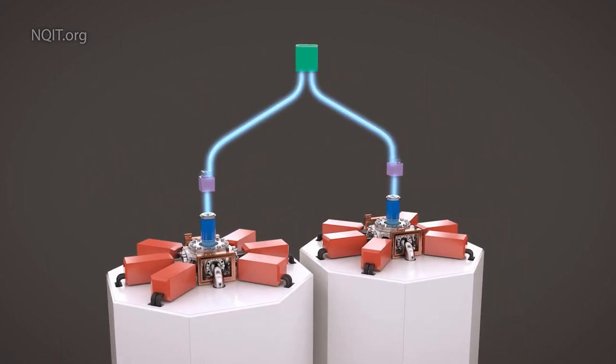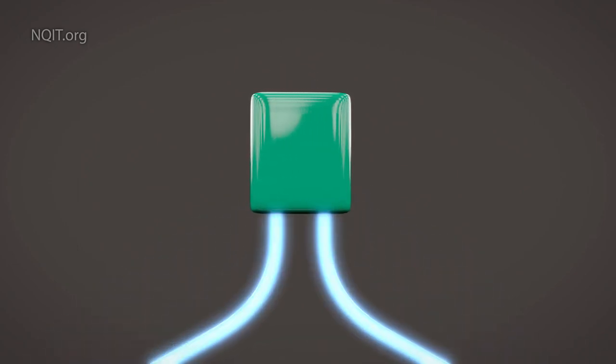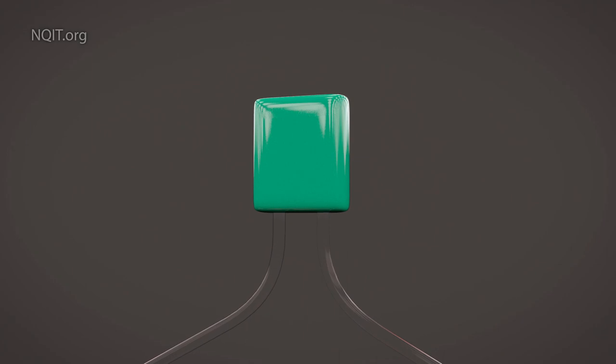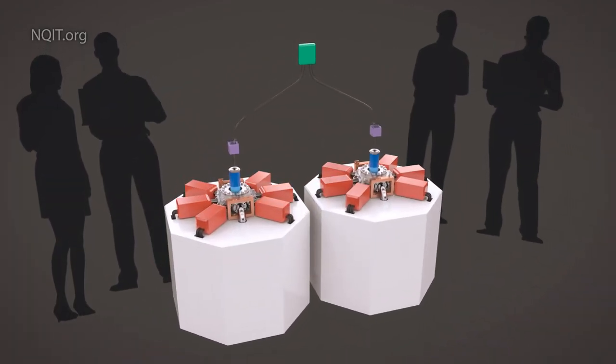When photons meet at the entangler unit in the middle, the ions that created those photons become quantum entangled, and so the two modules combine as a single quantum machine.